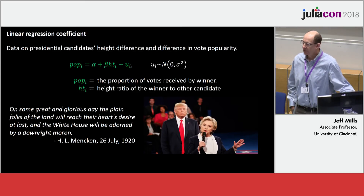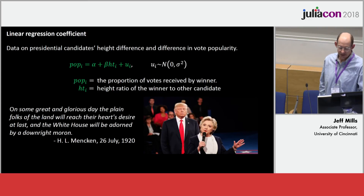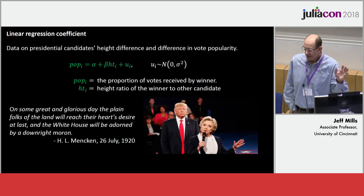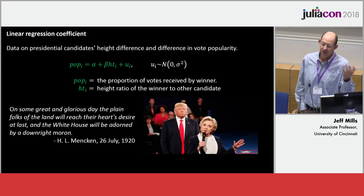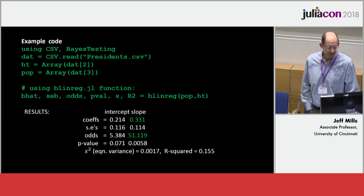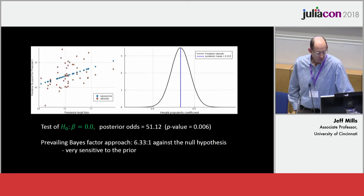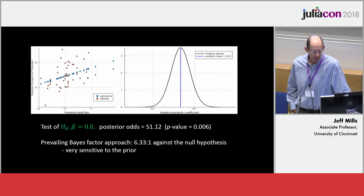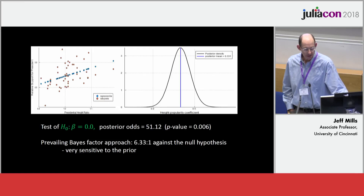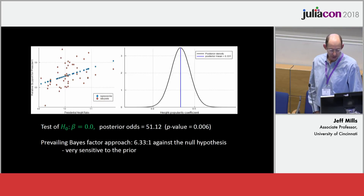For regression analysis, there's an example from the Bayes factor literature looking at the proportion of votes received by the presidential election winner and the height ratio of the other candidate. The key point is that you do exactly the same thing for more complicated models with more parameters, nonlinearity, or even a system of equations — it's the same Bayesian machinery for testing as well as inference. The function in the package runs the regression, and you can use keyword arguments to specify an informative prior. You get results where the null hypothesis has odds of 51 to one against it matching a p-value, whereas the prevailing Bayes factor approach only gives odds of just over six to one, which doesn't really match the posterior inference.